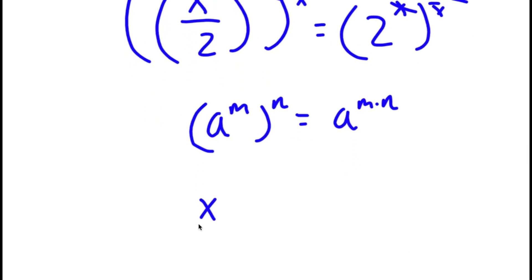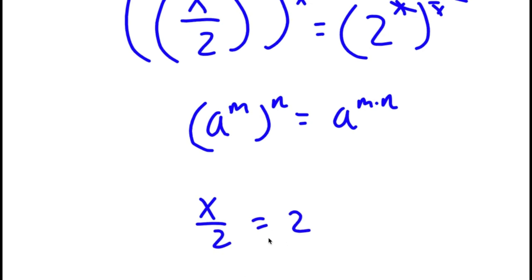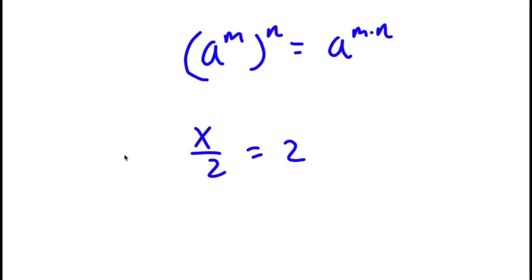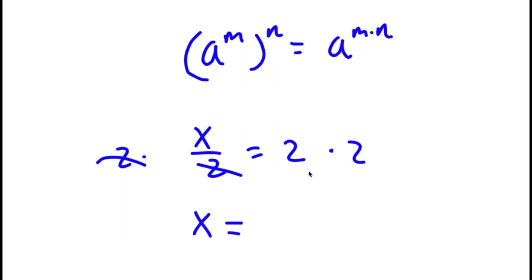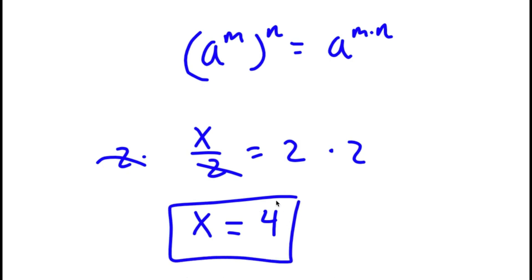So I'm simply left with x over 2 is equal to 2. To solve this, I'm going to multiply both sides by 2. These two cancel out, so on my left-hand side I have x, and 2 times 2 is 4. So x equals 4 is my answer.